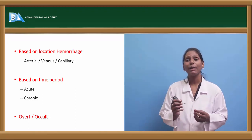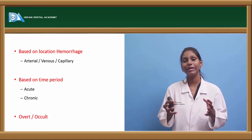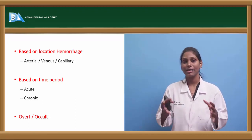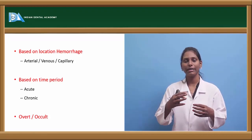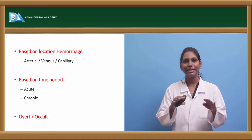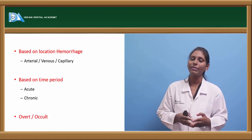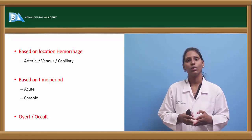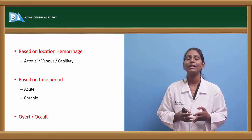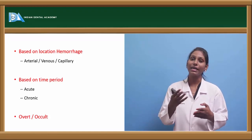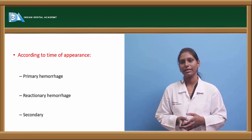Sometimes we do not know the source of blood loss — it is a hidden blood loss. These conditions are called occult hemorrhages or overt hemorrhages, and they are usually a type of internal hemorrhage.